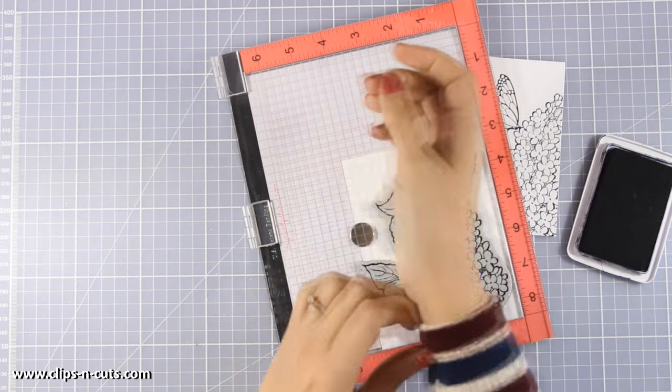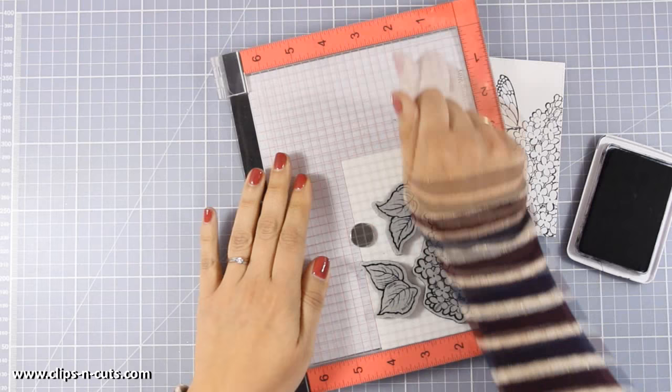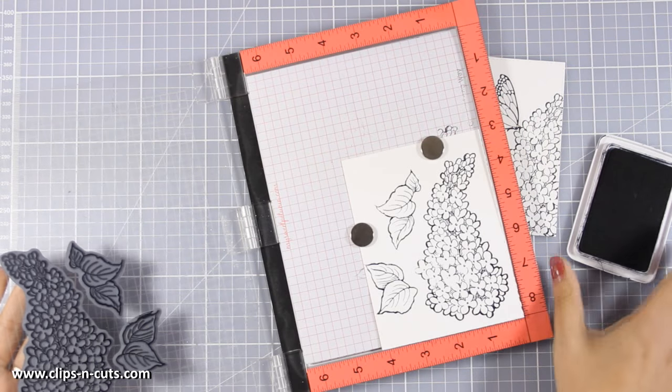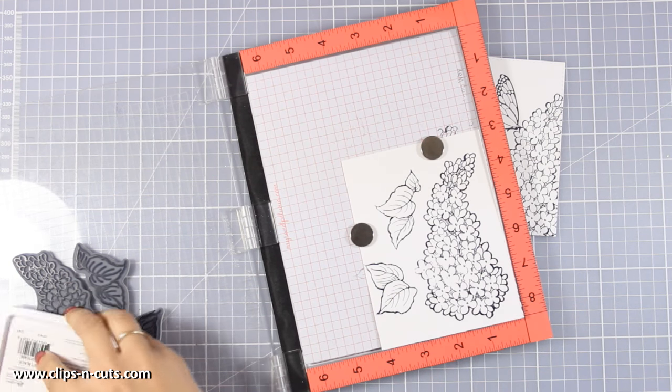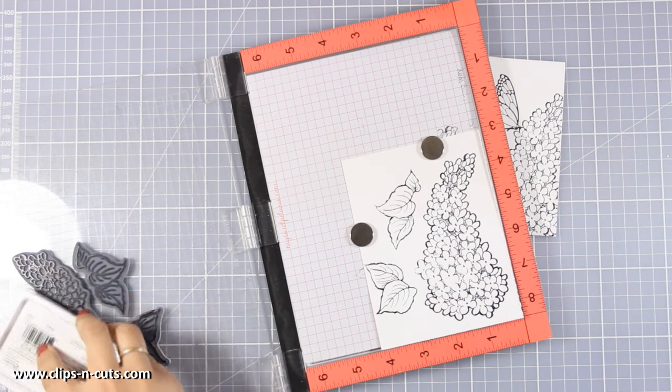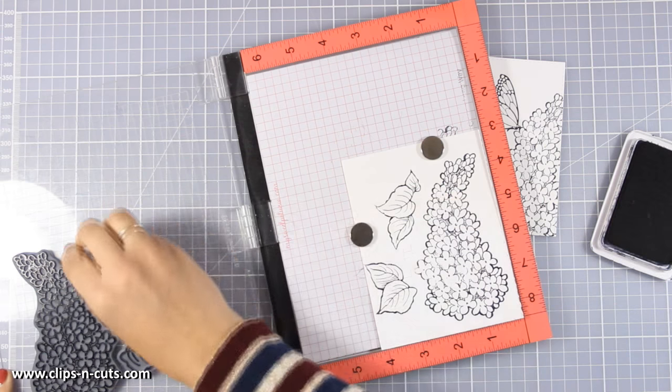And now I'm also going to stamp that lilac and a couple of those leaves again with black archival ink on another piece of paper. And these are going to be die cut later on and I am going to use them as pop-up elements on the inside of my card.